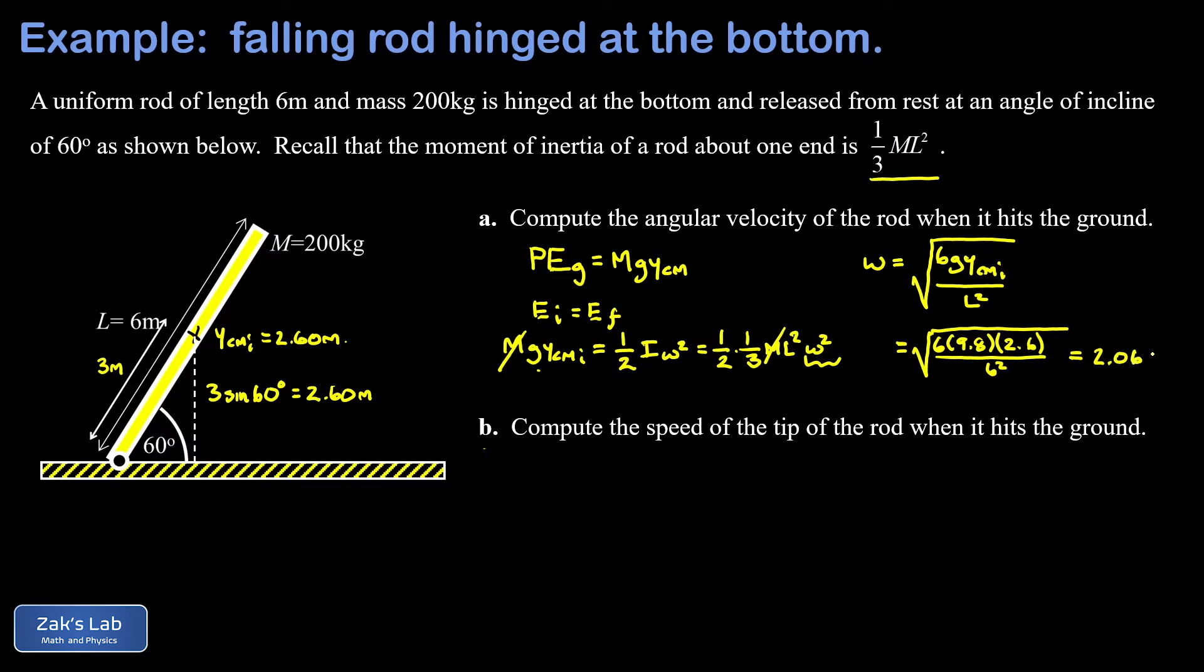Now part B is the easy part. Relating the tangential speed to the rotational speed is as simple as remembering the relationship v equals r omega. We plug in the distance from the axis of rotation which is six meters, the angular velocity that we just found, 2.06 radians per second. To three significant digits we get 12.4 meters per second at the tip of the rod, and we're done.